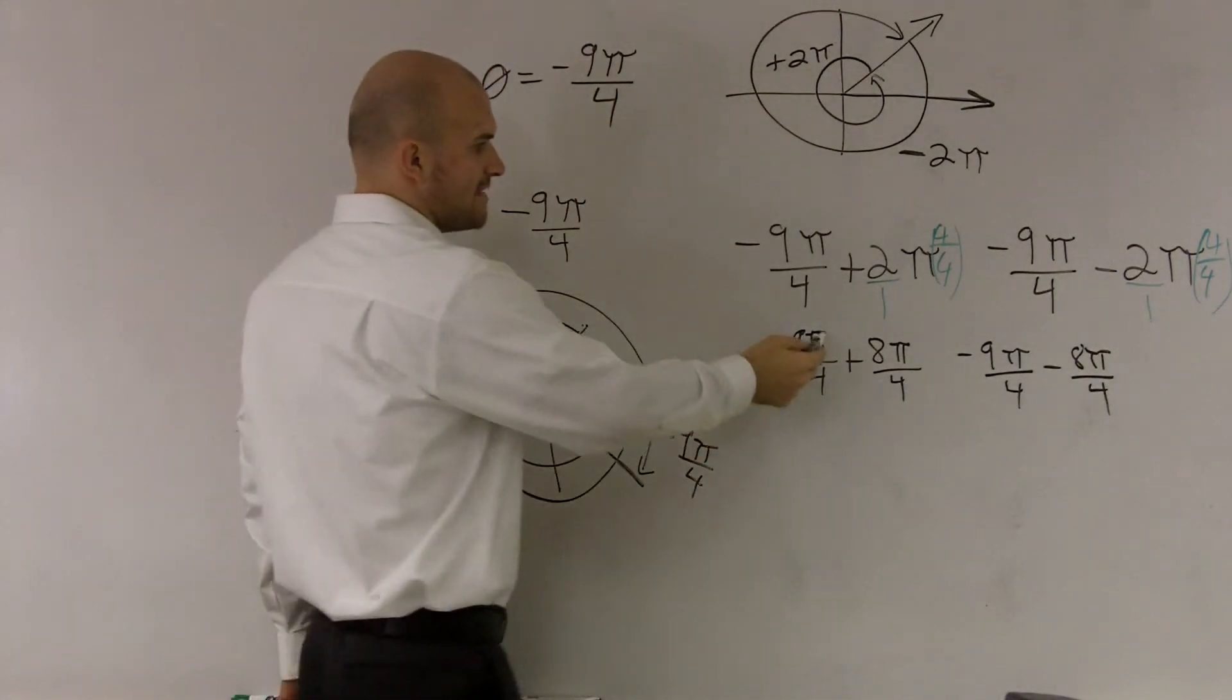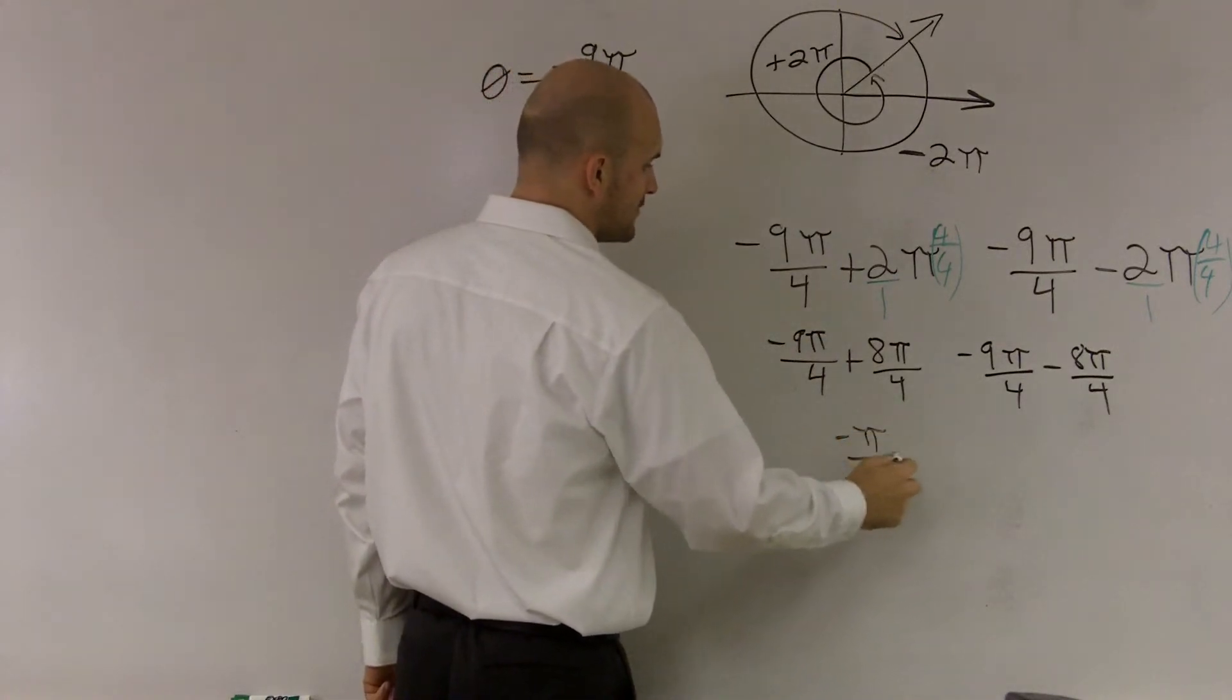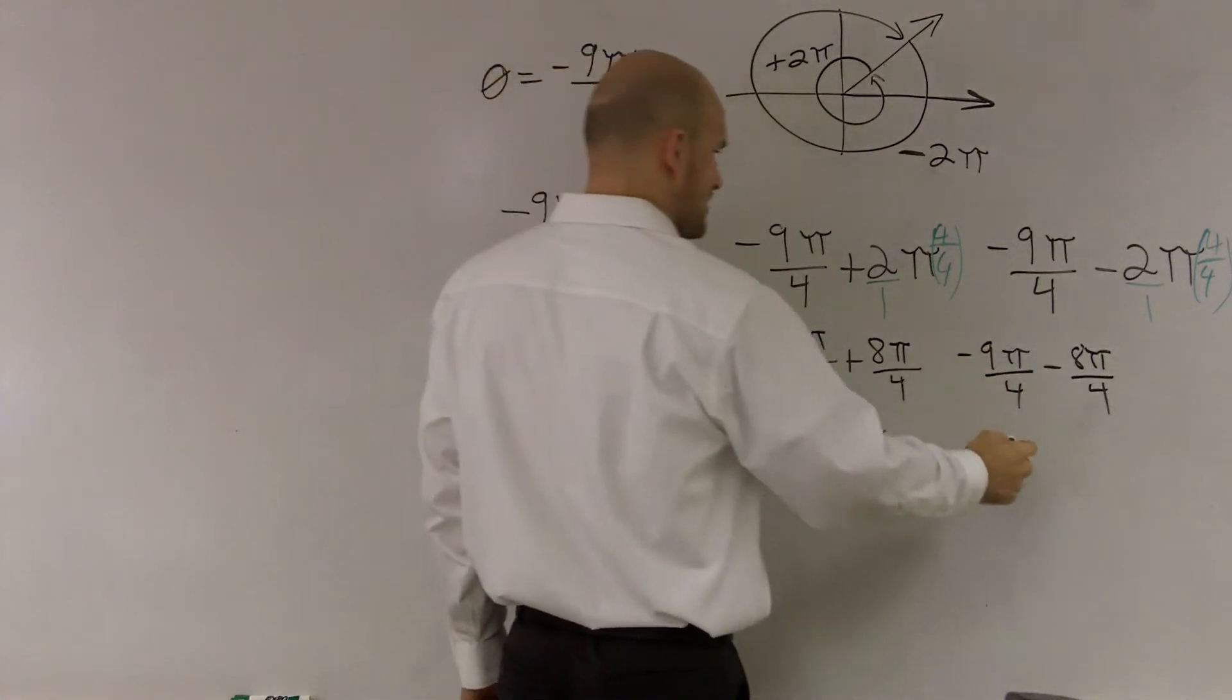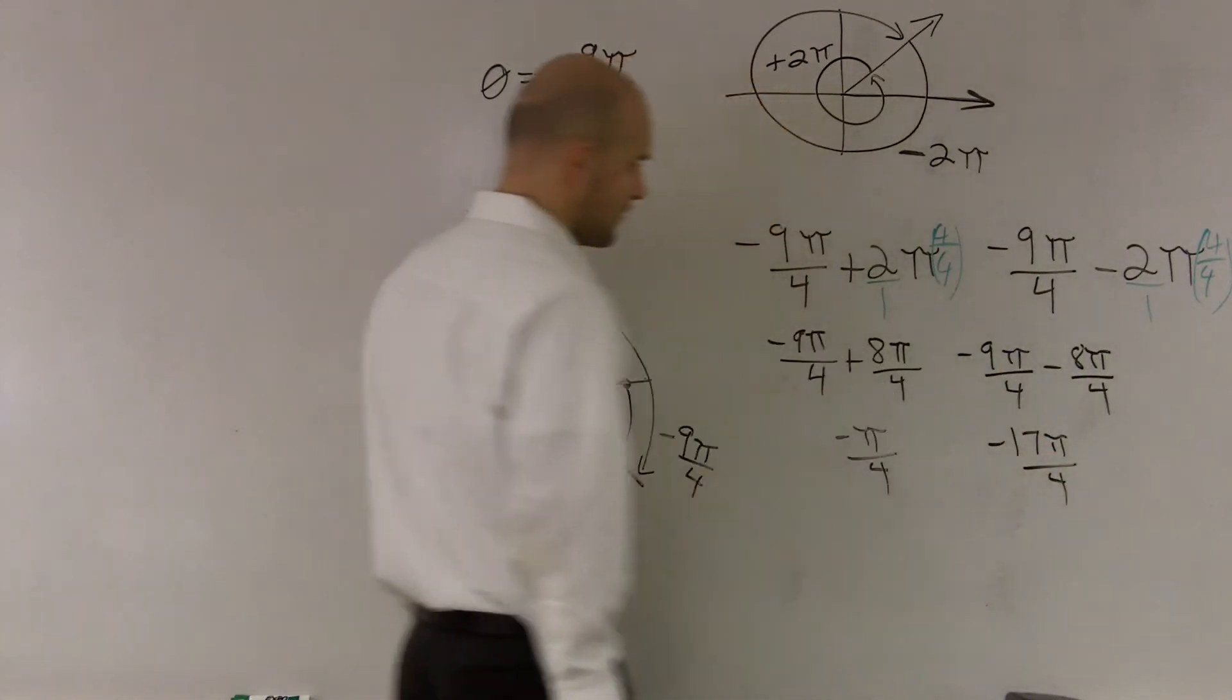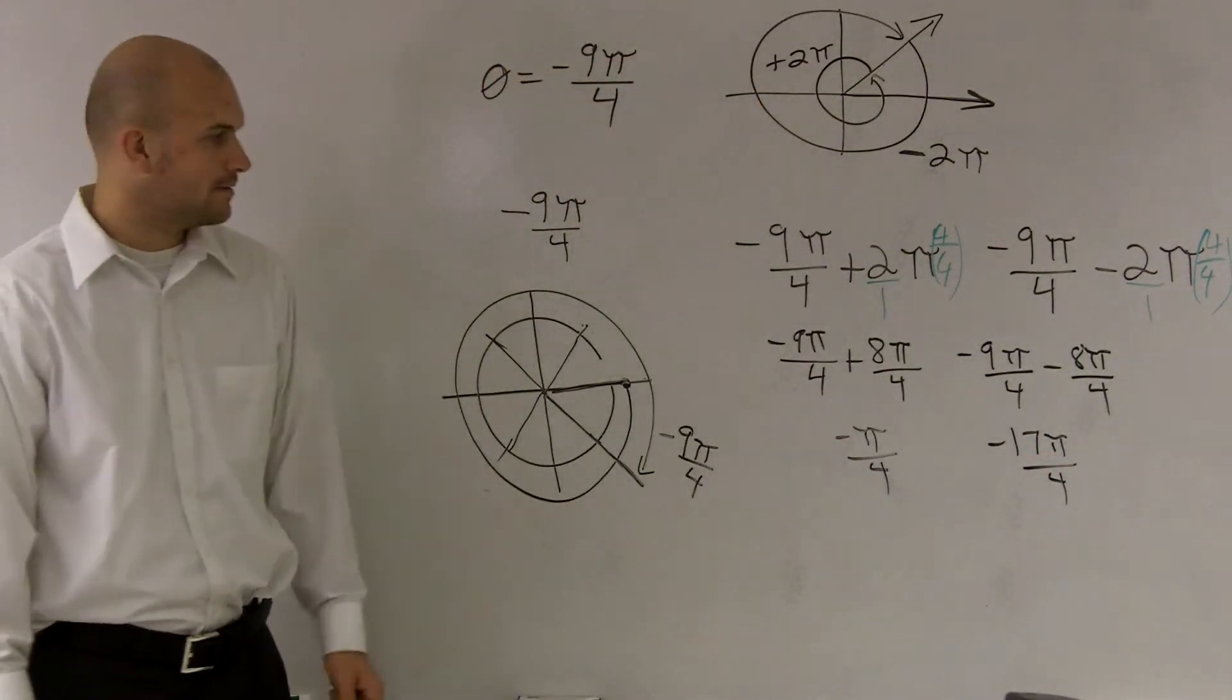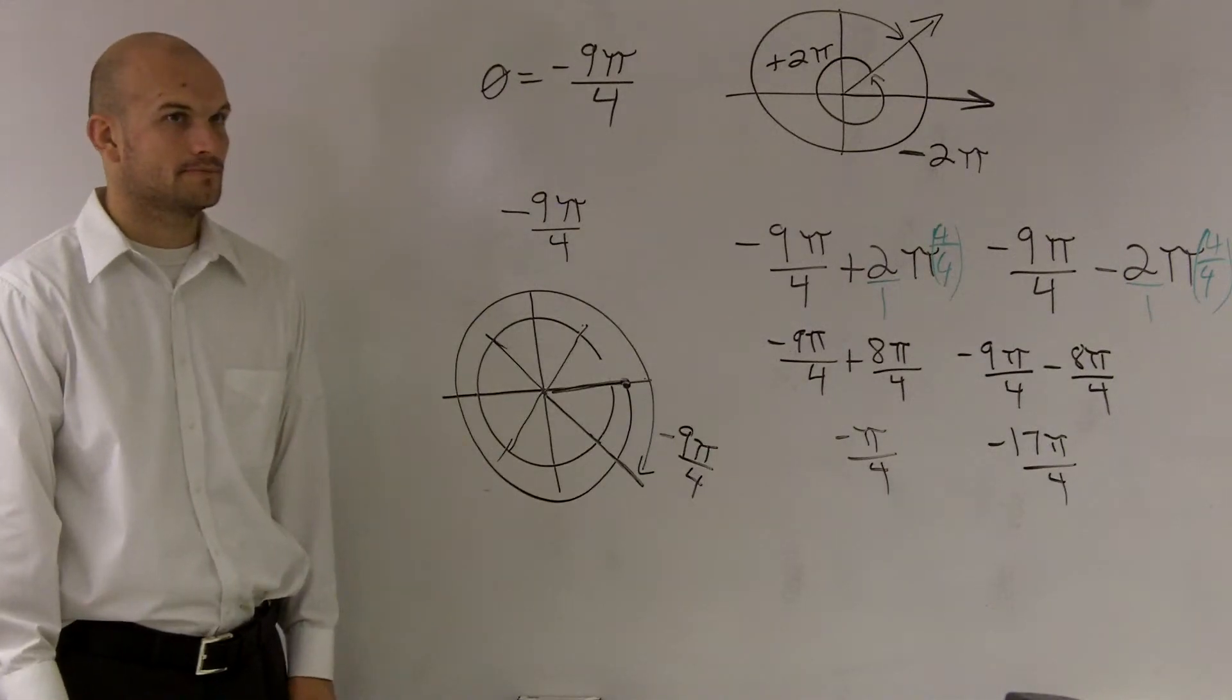So there, negative 9π plus 8π is negative π over 4. And this one becomes negative 17π over 4.